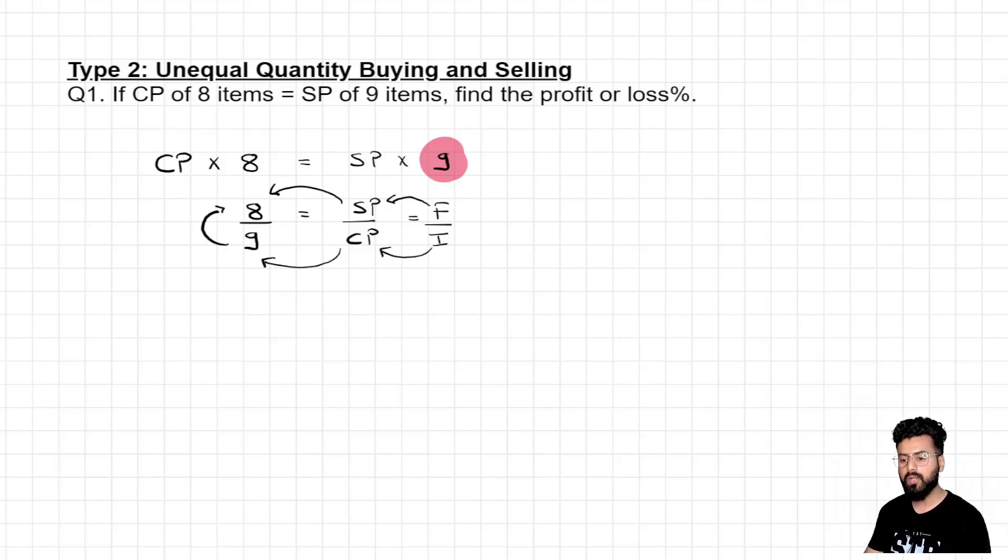After doing comparison you would realize when cost price is 9 selling price is 8. So if you look at the change what change we are looking at? We are looking at a negative change. Negative change means a loss. So let us calculate loss percent. A loss of 1 over which price? Over cost price. And what is 1 by 9 in terms of percent is something which we all are aware about. 11.11 percent.